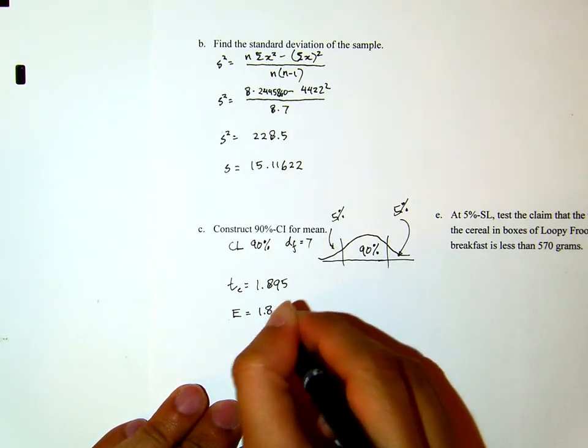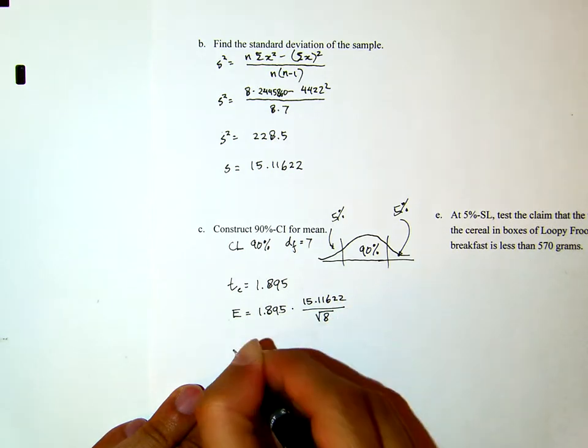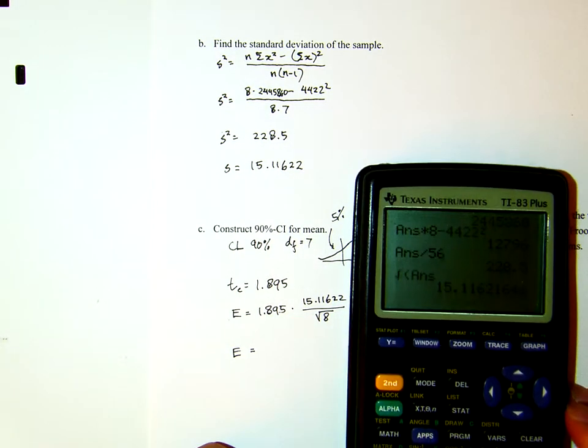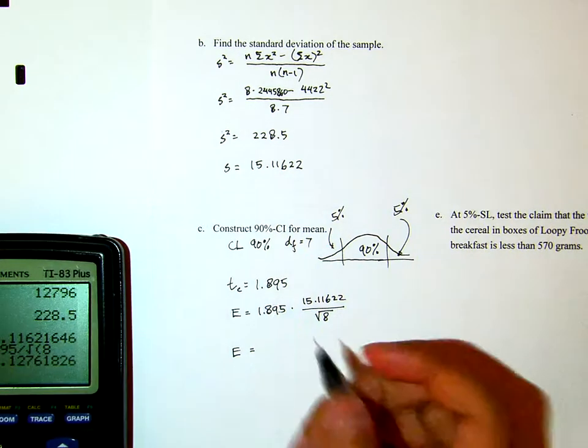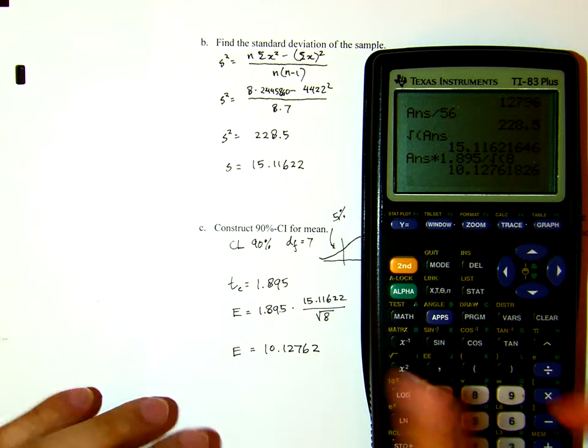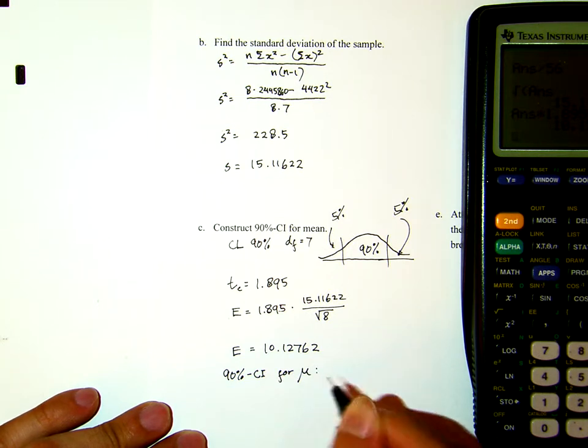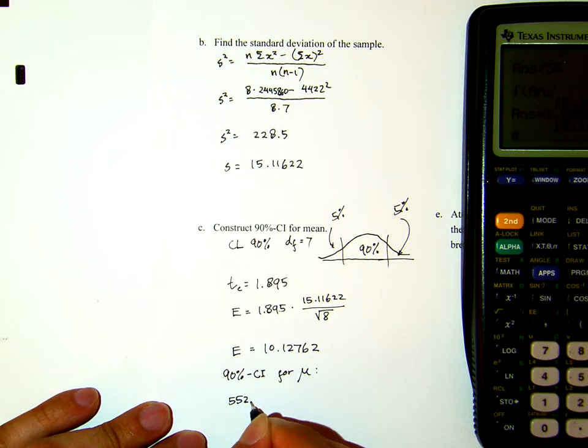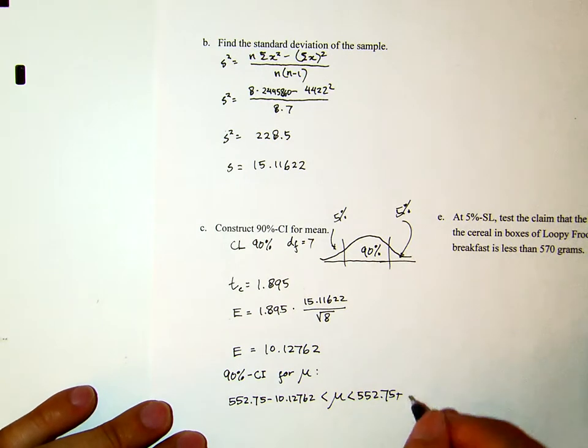The margin of error will be 1.895 times the standard deviation divided by the square root of 8. Using the numbers from earlier, 1.895 times 15.11622 divided by the square root of 8 equals 10.12762. The 90% confidence interval for mu is the sample mean 552.75 minus the margin of error.